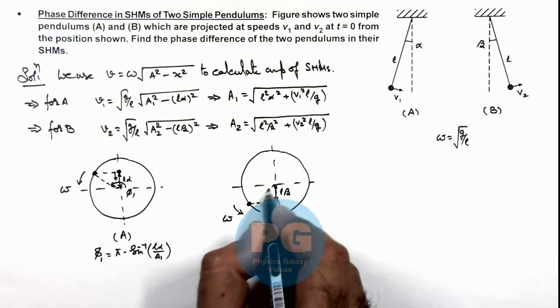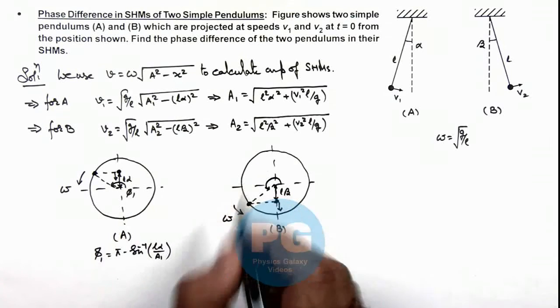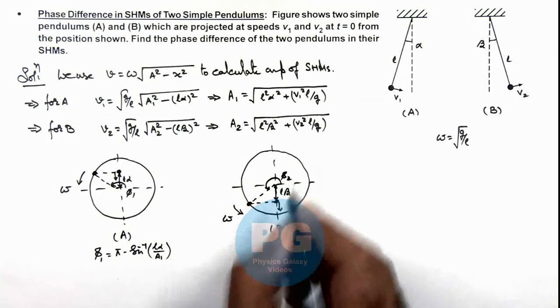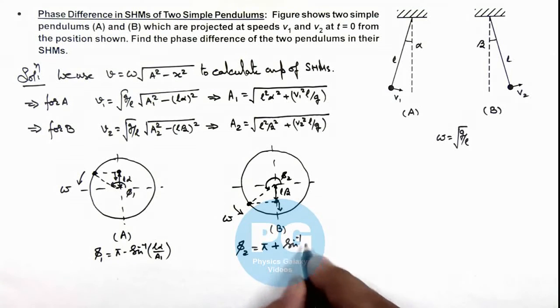So at this position, its phase angle with respect to the same initial reference point is φ₂, and the value of φ₂ is π + sin⁻¹(l·β/A₂).